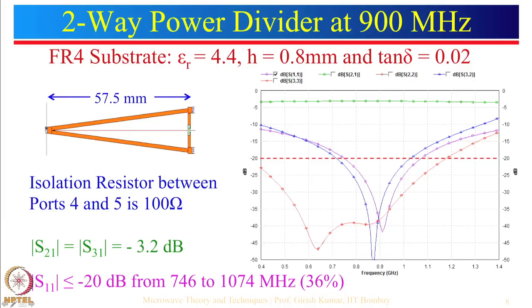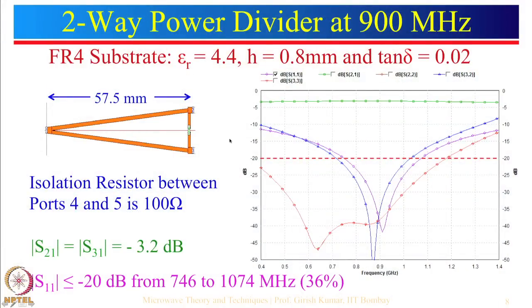Here port 1 is defined, this is port 2 and port 3. Ports 4 and 5 are defined to place the isolation resistance. In IE3D you use M-grid for layout and simulation, and then in Modua you can replace ports 4 and 5 and connect a 100 ohm resistor there. Let us see what results we get.